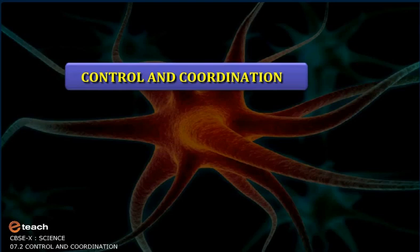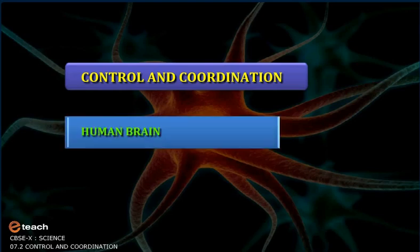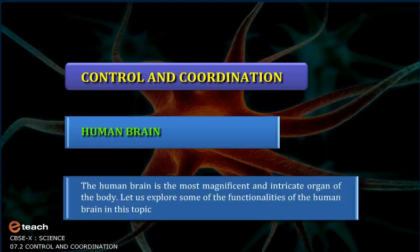Control and coordination: the human brain. The human brain is the most magnificent and intricate organ of the body. Let us explore some of the functionalities of the human brain in this topic.